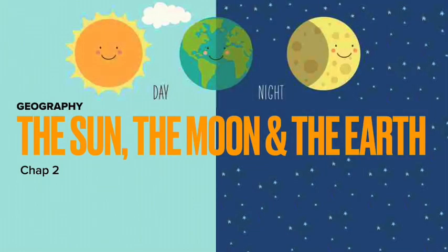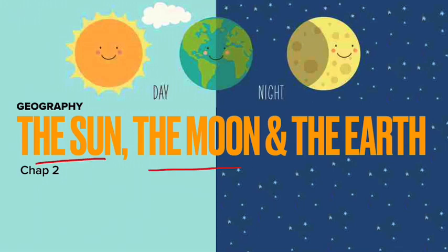Good morning class. I am teaching a different subject today, which is geography. When Frank and I discussed SST, we saw that geography and science have many similarities, so we decided that I will also teach geography. Starting with geography chapter 2 of grade 7, the chapter name is 'The Sun, the Moon and the Earth.' As the name suggests, in this chapter we are going to learn about these three things.